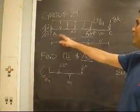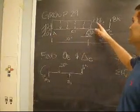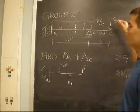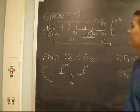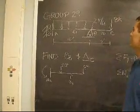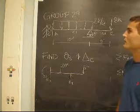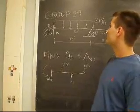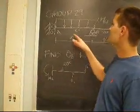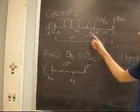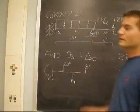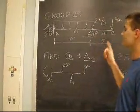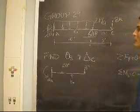From A to B there is a 2 kip per foot distributed load, and at C there is an 8 kip-foot load pointing down. The stiffness of the beam from A to B is EI and the stiffness from B to C is 2EI.